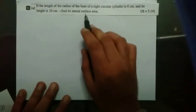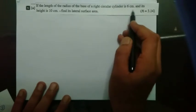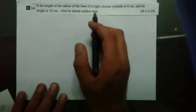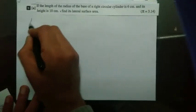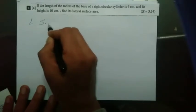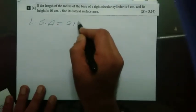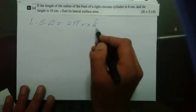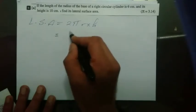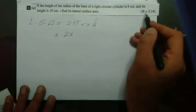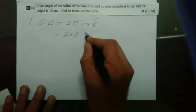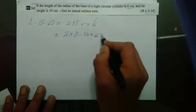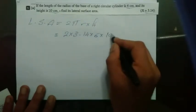The length of the radius of the base of a right circular cylinder is 6 centimeters and its height is 10 centimeters. Find the lateral surface area. The rule of the lateral surface area equals 2πr times height, which is the perimeter of the circle times the height. So it equals 2 times 3.14 times 6 times 10.